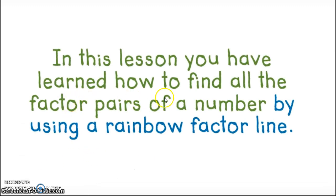So in this lesson, you've learned how to find all the factor pairs of a number by using the rainbow factor line. But then I've got one more example for you. It's a little bit harder, but again, use your scratch paper and pause the video. I want you to find all the factor pairs for 30.